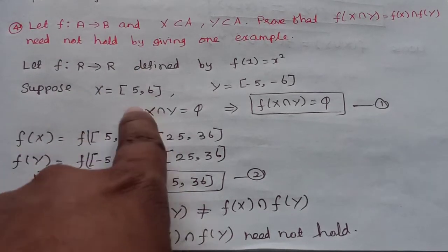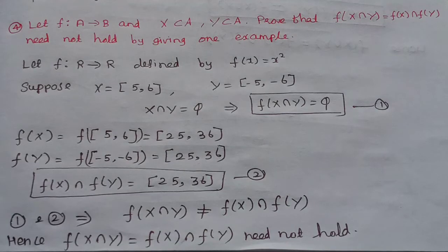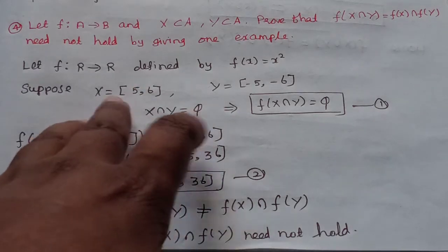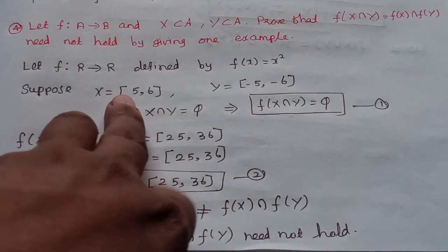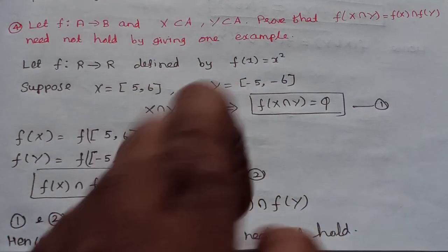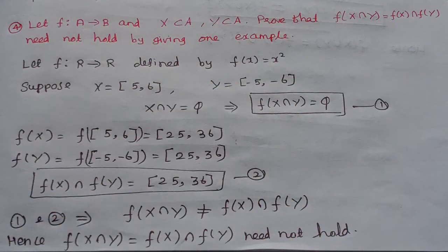The closed interval is [5,6]. Suppose X = [5,6] and Y = [-5,-6]. Let's find X∩Y.